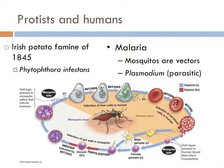Though blight ravaged potato crops throughout Europe in the 1840s, the impact and human cost in Ireland — where one third of the population was entirely dependent on the potato for food — was exasperated by a host of political, social, and economic factors. The potato blight was caused not by a bacteria or fungus, but by a protist.